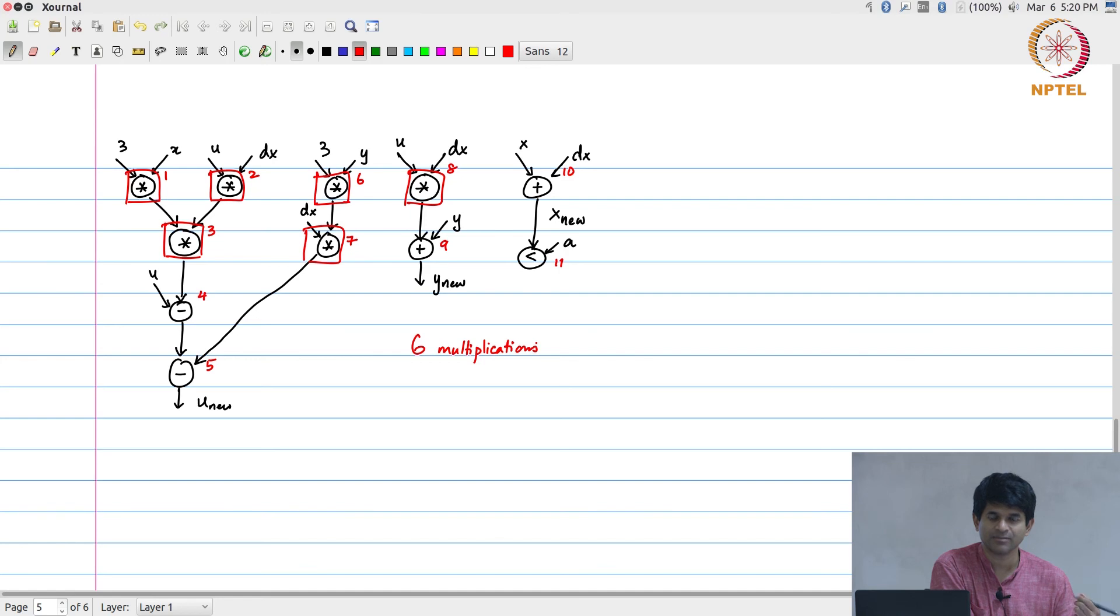Rather than saying I need separate hardware units for all of those, addition and subtraction at least we know can be done by the same hardware because you just use twos complement and addition and subtraction essentially become the same thing. Comparison is also essentially the same thing because all that it involves is you do a subtraction and check whether the result was negative or positive.